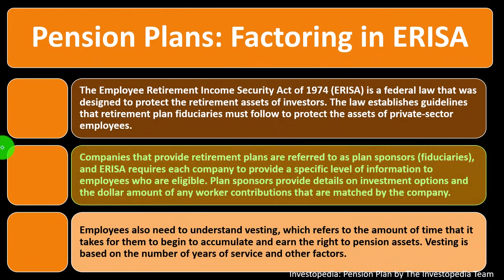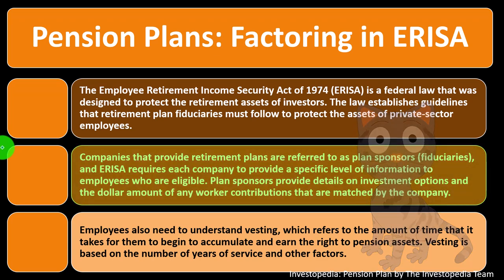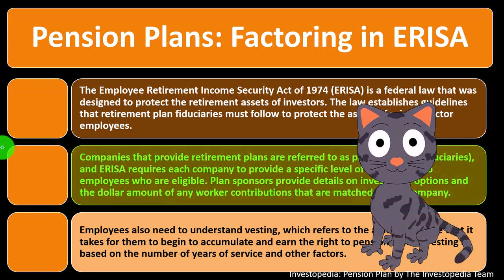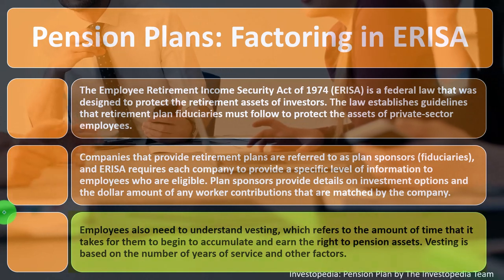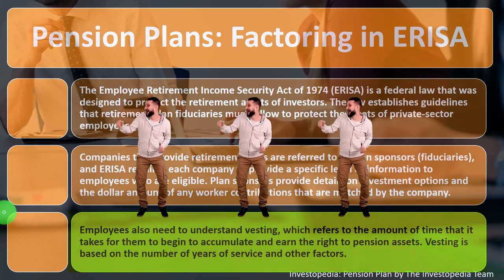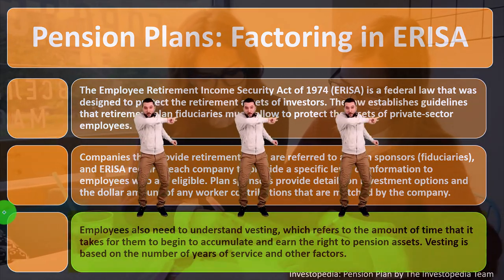Another issue is non-discrimination rules. Generally, if a company offers a 401k plan, there must be consistent, transparent rules about who qualifies — you can't selectively offer it only to high-income individuals. Everyone must be able to see and understand the benefits and eligibility. Employees also need to understand vesting, which refers to the amount of time it takes to accumulate and earn the right to pension assets, based on years of service or other factors.